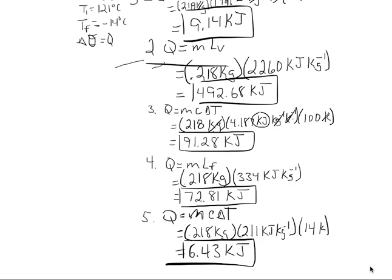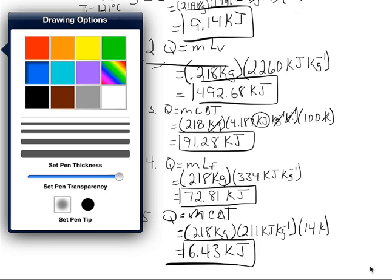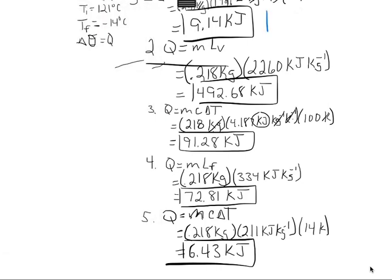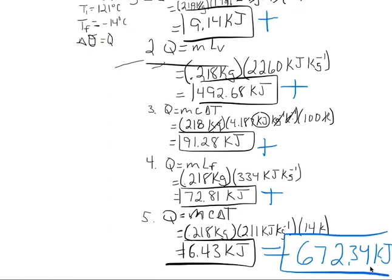The next step is to add them all up — all five parts together. When we add each of these phase values together, we get a total energy of 672.34 kilojoules. That is the total amount of energy it takes to change the steam at 121 degrees Celsius down to ice at negative 14 degrees Celsius.